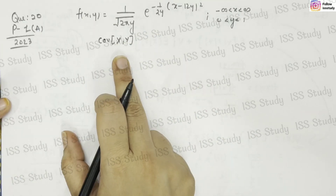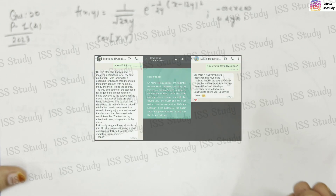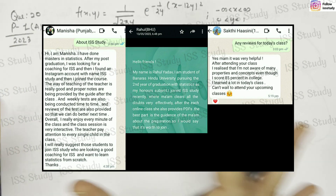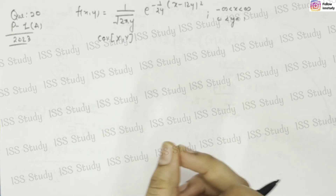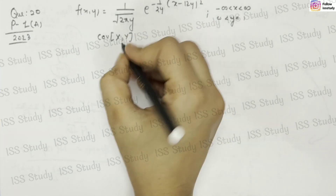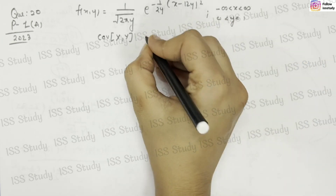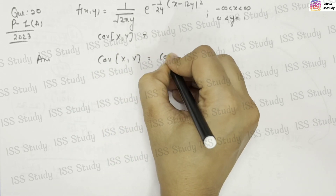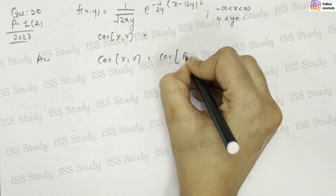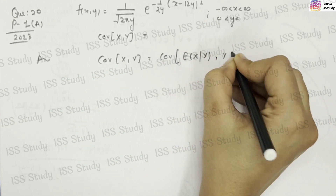We are going to use the simplest method to find the answer to this question. Moving back to the question, we have to find the covariance of x and y. The formula I am going to use for covariance of x and y is: Cov(X,Y) = Cov(E[X|Y], Y). I am using this because it will give you the answer in the shortest time — it will save you time and it is the easiest approach.